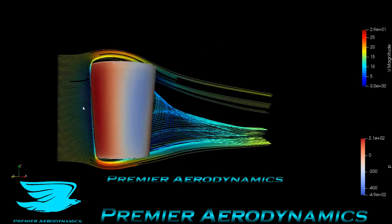We always have the surface pressure in red and blue — you have the high pressure at the front as you'd expect, and low pressure on the sides as the flow accelerates.